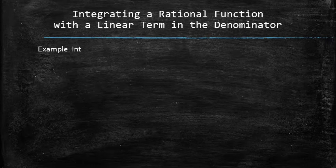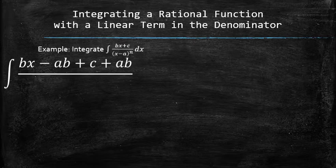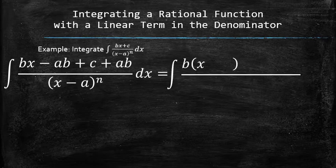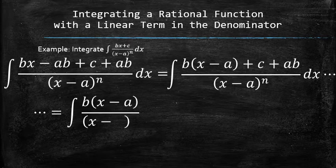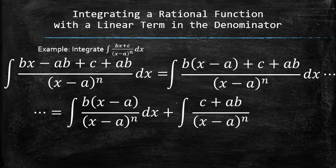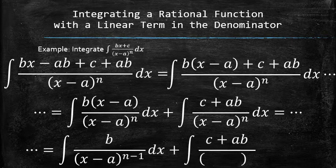As a result, we can now integrate the following type of rational functions. First, we add and subtract a times b in the numerator and regroup the terms. Then, we use the linearity property of the integrals and split the original integral into two. After reducing the rational function in the first integral, we now have a pair of simple integrals of similar type.